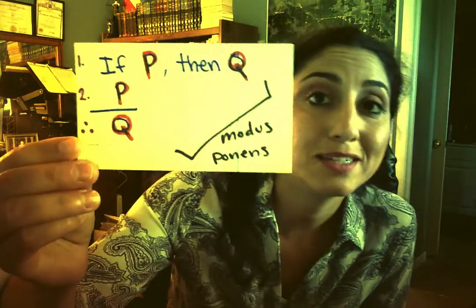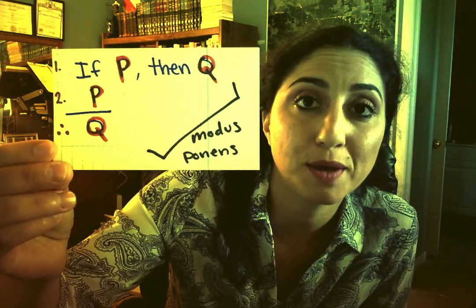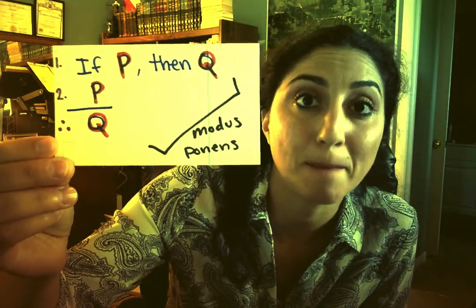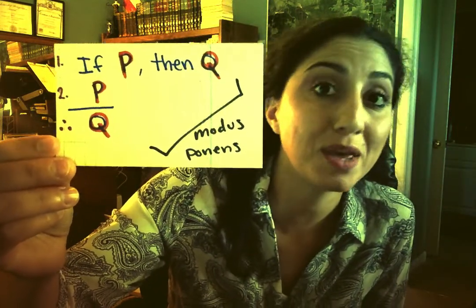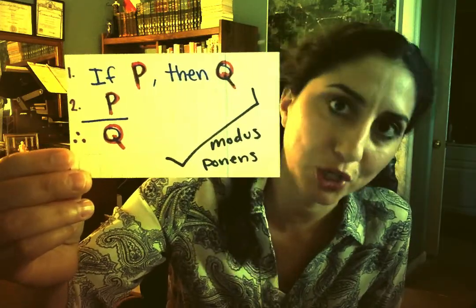It turns out it's a modus ponens with one of the premises missing. If P, then Q. P, therefore Q.